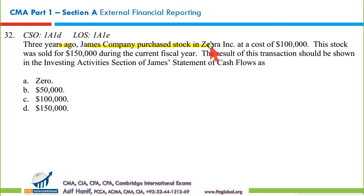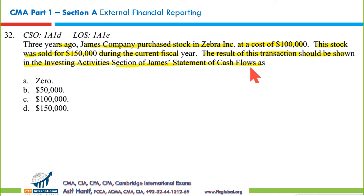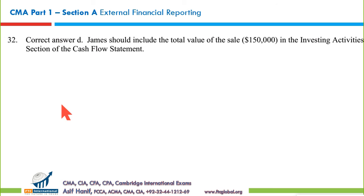Question 31: Three years ago, James Company purchased stock in Zebra Inc. at a cost of $100,000. This year it was sold for $150,000 at a gain of $50,000. In investing activities, we report the total cash received — $150,000 — not just the gain. The gain is separately handled as an adjustment in operating cash flows (deducted). So investing activities shows $150,000 inflow — making D the correct option.